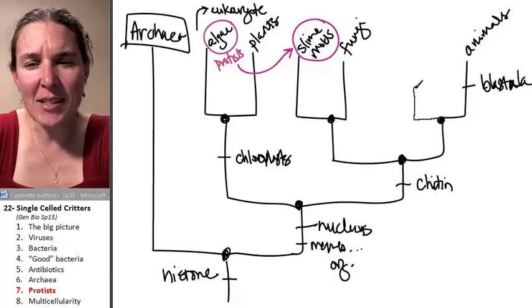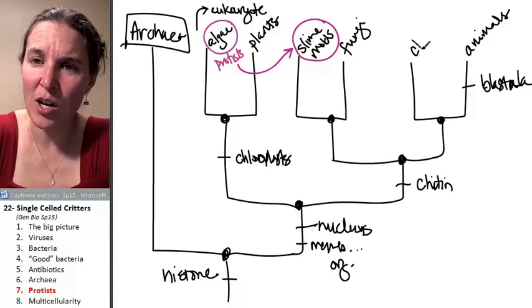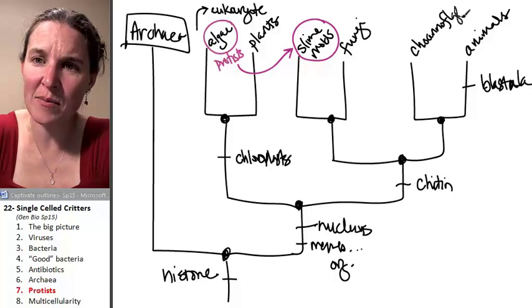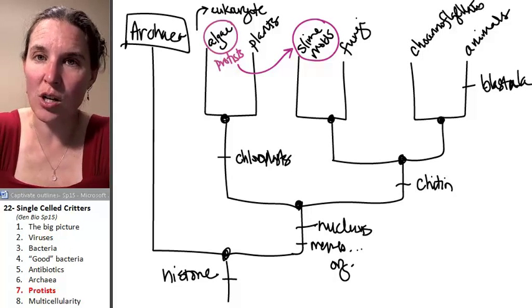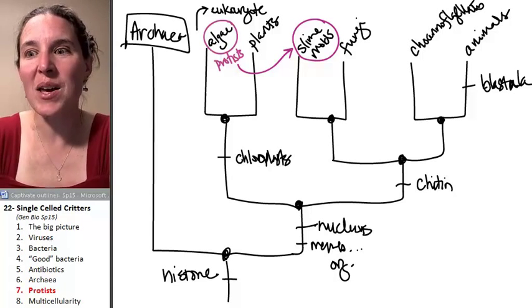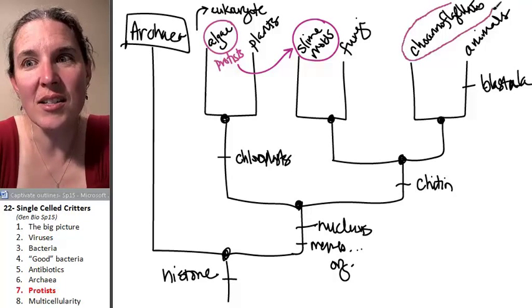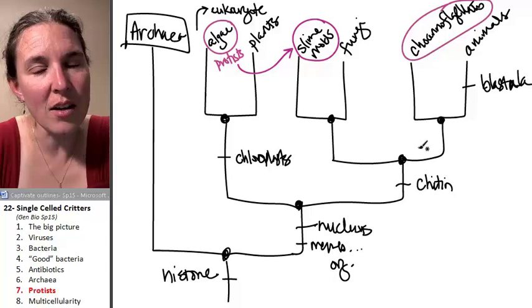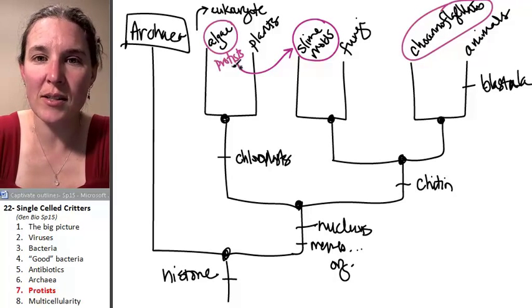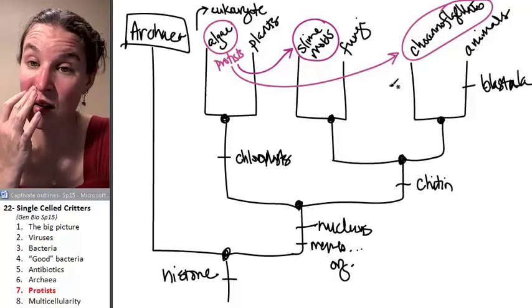And they have a sister group. And I'm going to tell you more about these guys, but they're called choanoflagellates. Sure, choanoflagellates. We're going to learn about them in the animal lecture. But guess what choanoflagellates are? They're single-celled critters. They're protists.